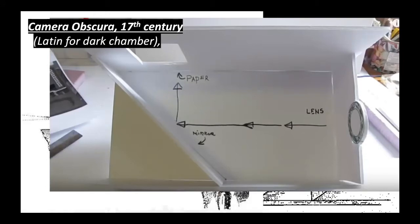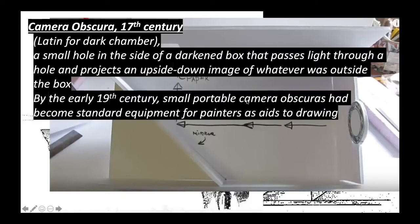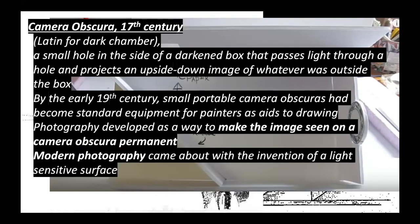This is how people believe Vermeer actually created his small paintings, like the Woman Holding a Balance or the Girl with the Pearl Earring. They're all kind of the same size, so it's believed he created his paintings using a camera obscura. So photography developed as a way to make that projection into a permanent image.